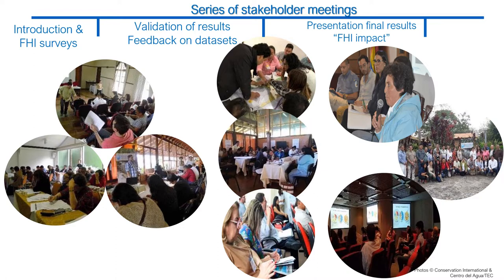The first meeting is to introduce stakeholders to the FHI framework and to answer two surveys. The second meeting is to present the preliminary results and methods, as well as to get feedback, to see if there is the need to adapt or change any of the calculations. The final meeting is to discuss final results and next steps.